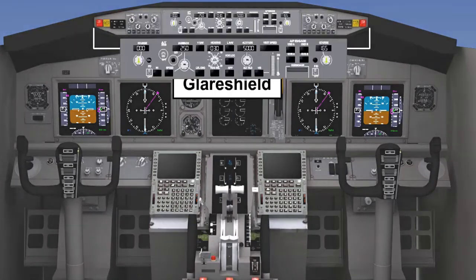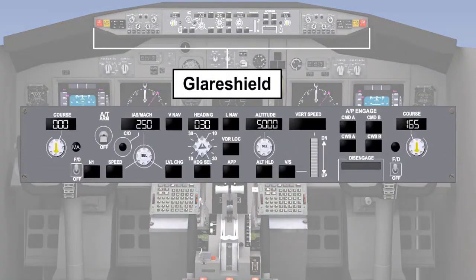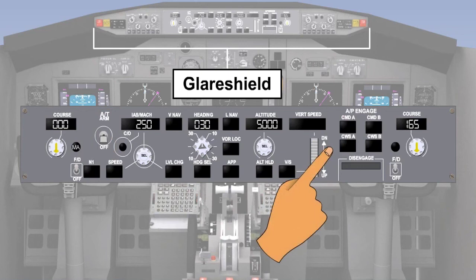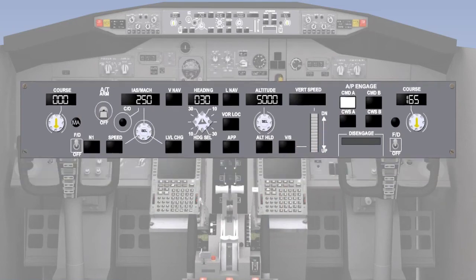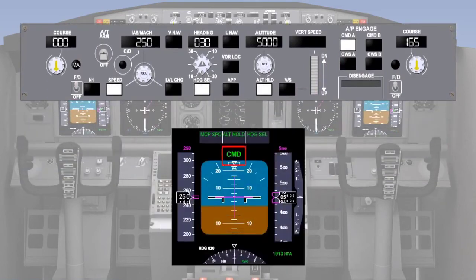On the glare shield is the mode control panel, which allows selections for the autopilot, flight director and auto throttle. The mode control panel is easily accessible to both pilots. To engage the autopilot, the engage button for the selected autopilot is pressed. If the interlocks are made, the autopilot will engage and a light in the button will illuminate to signify engagement. There will also be an indication on the flight mode enunciator.